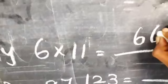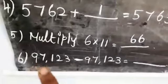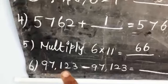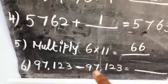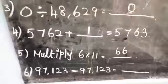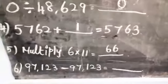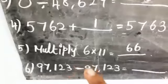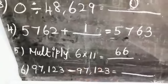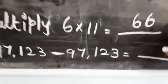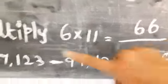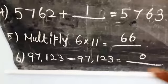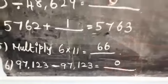Sixth one: 97,123 − 97,123 = dash. When a number itself is subtracted from a given number, we get the answer 0, because both numbers are the same.